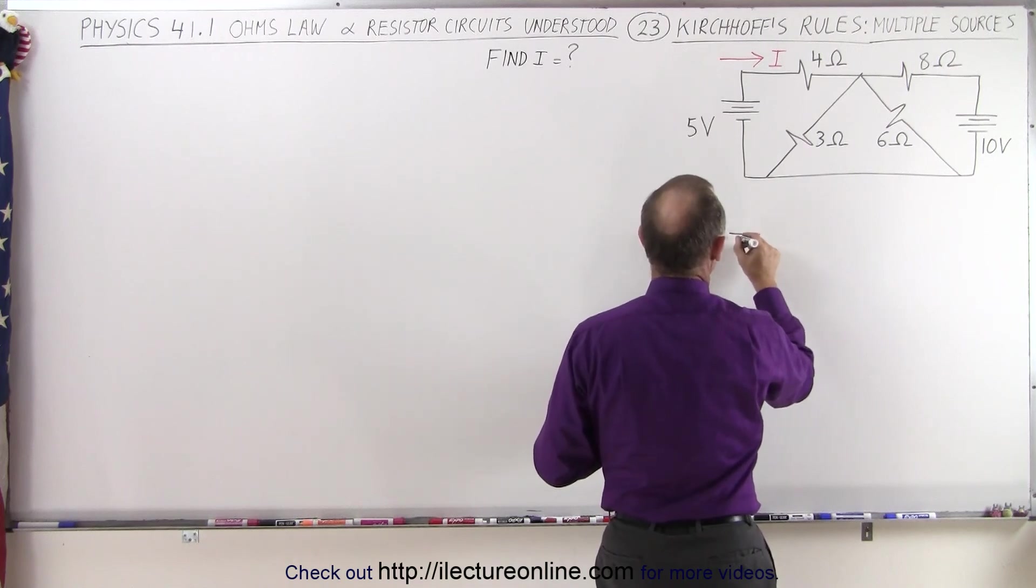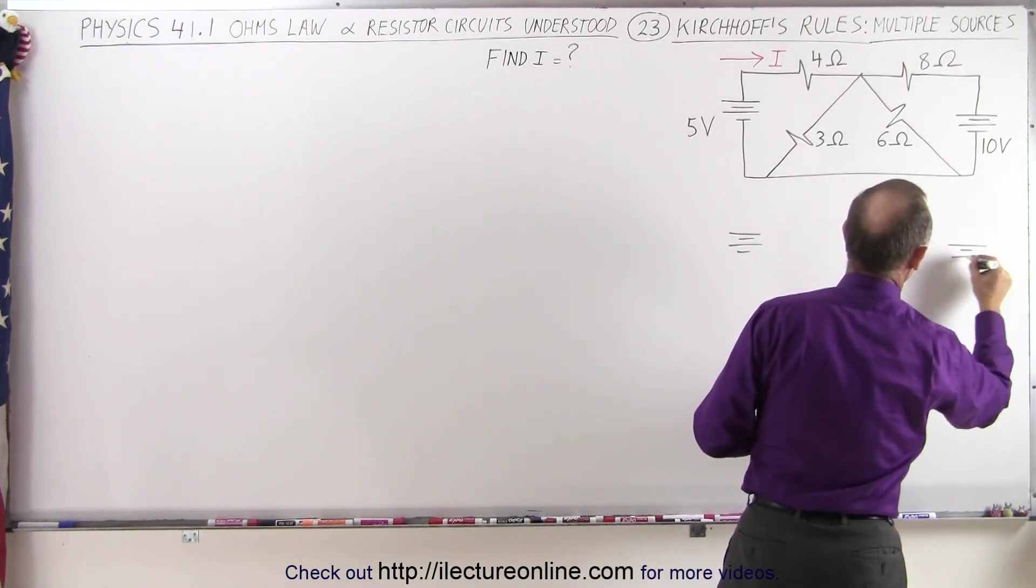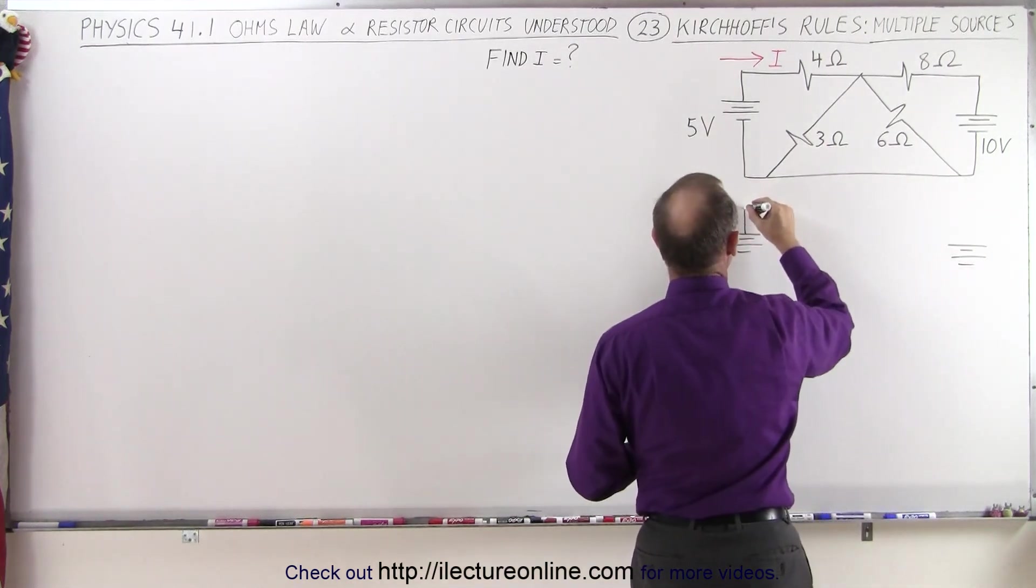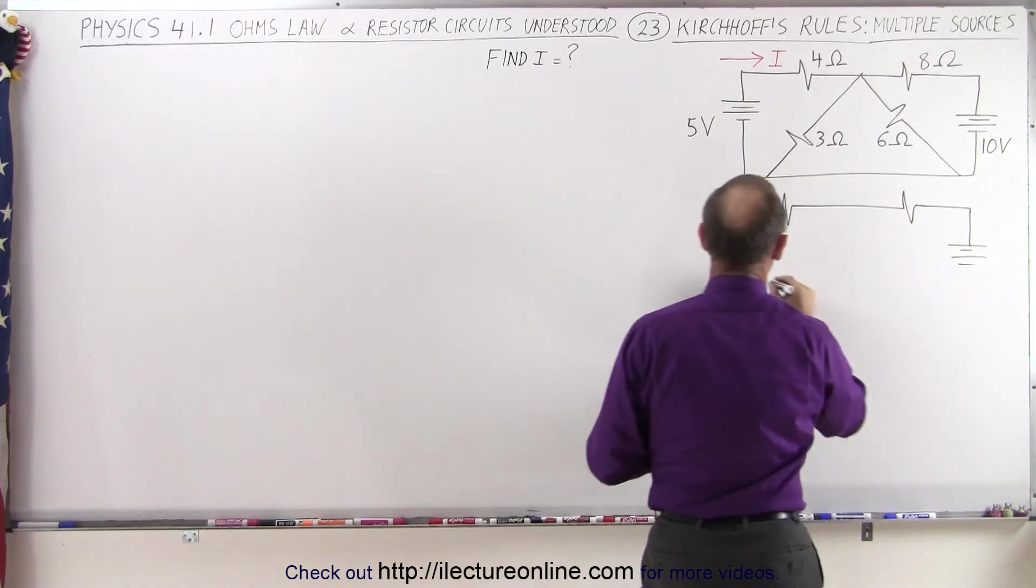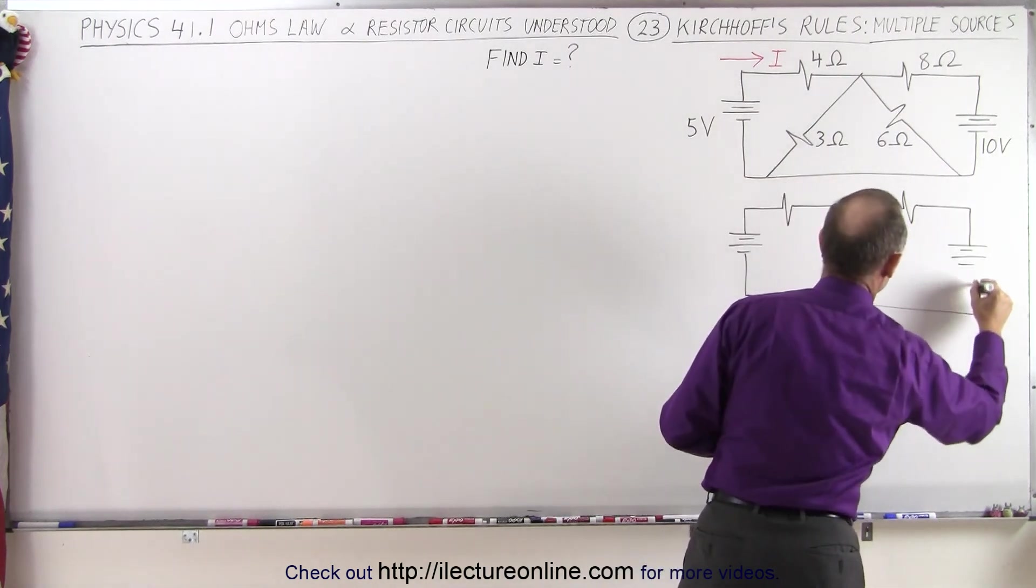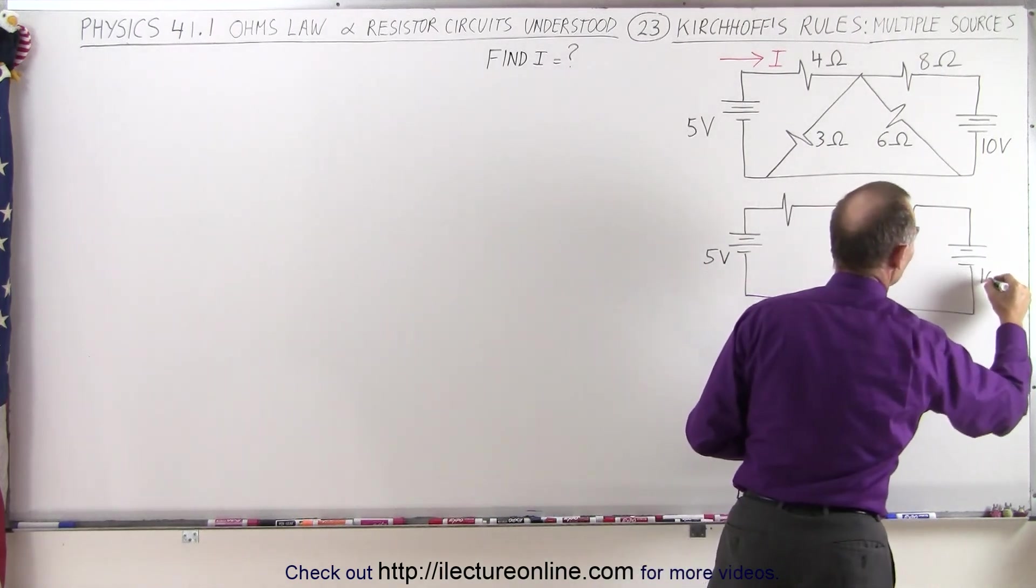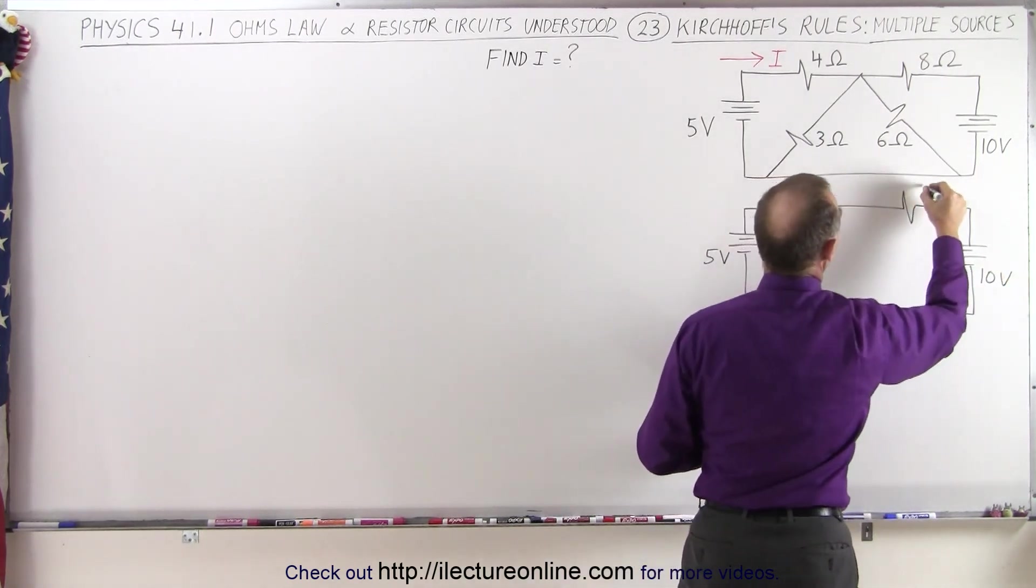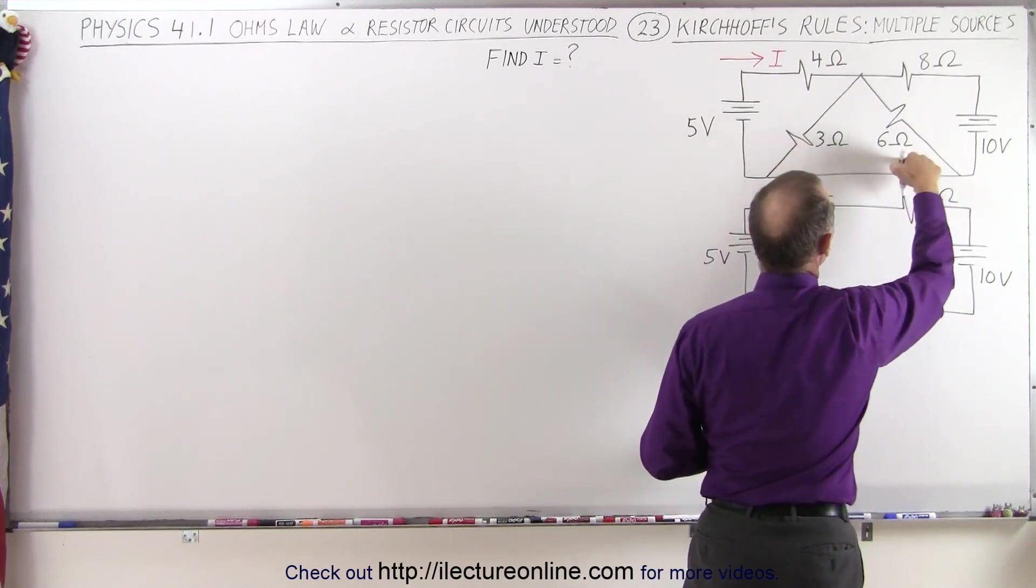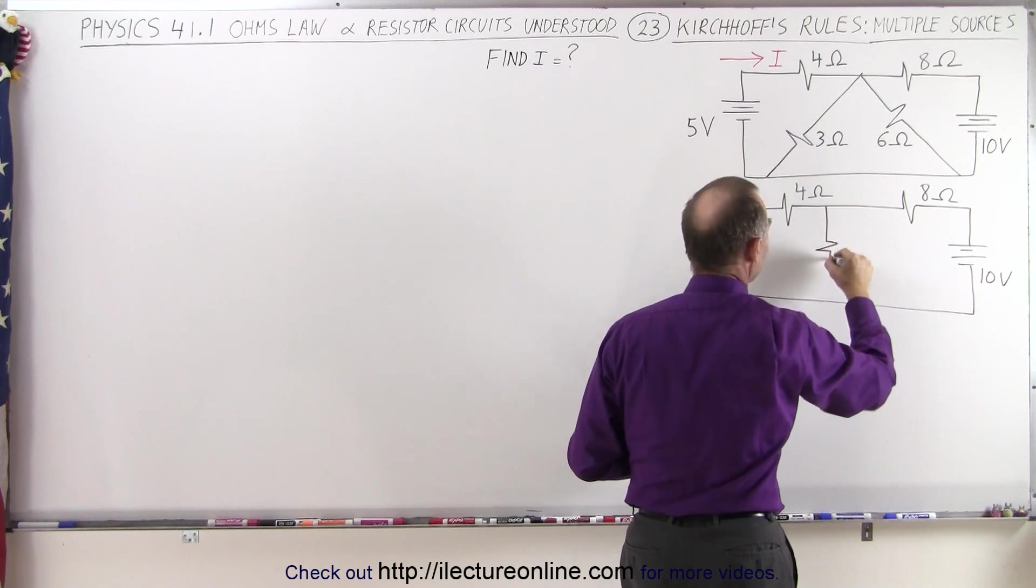All right, so we have a battery right over here. We have another one over here. That hasn't changed. Those two resistors up there are still the same. We'll connect this at the bottom like so. This is our five-volt battery, a 10-volt battery. Here we have a four-ohm resistor and an eight-ohm resistor, but now these two circuits right here, these two branches, we can go ahead and draw them like this.